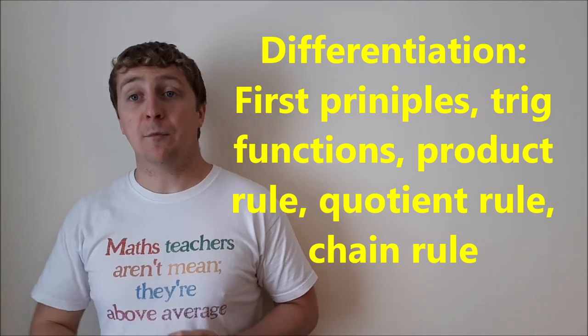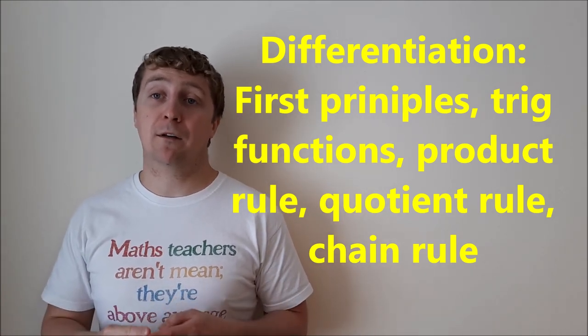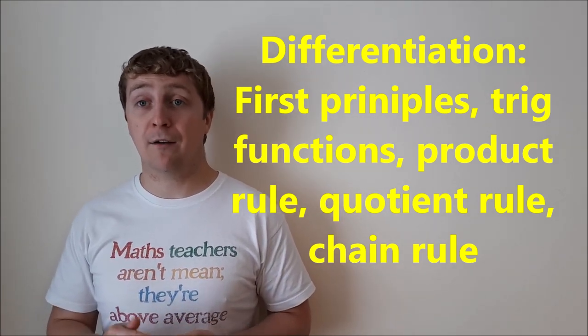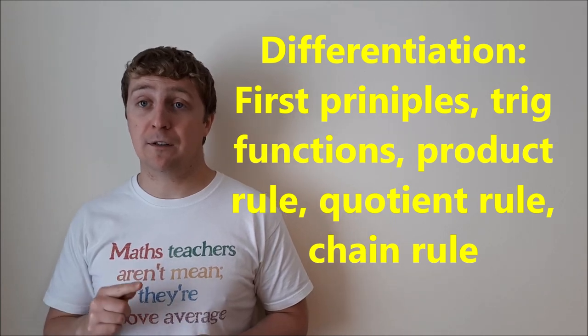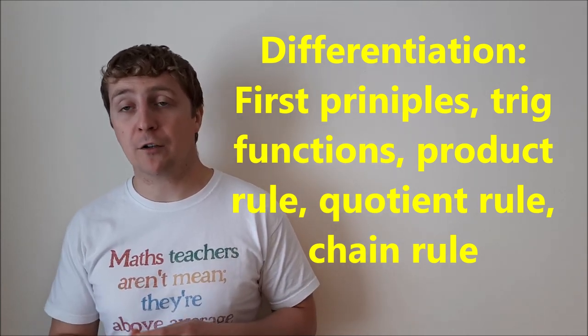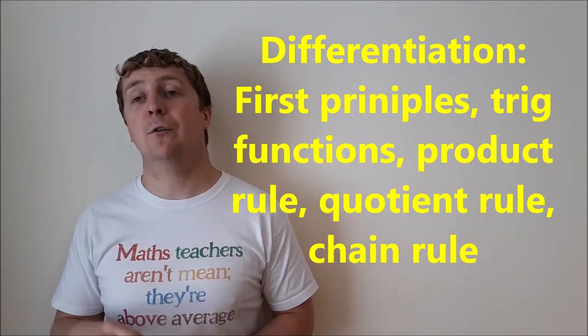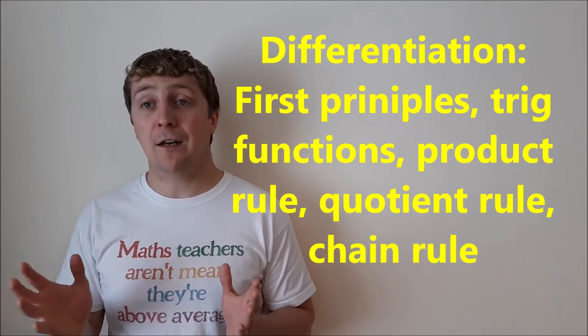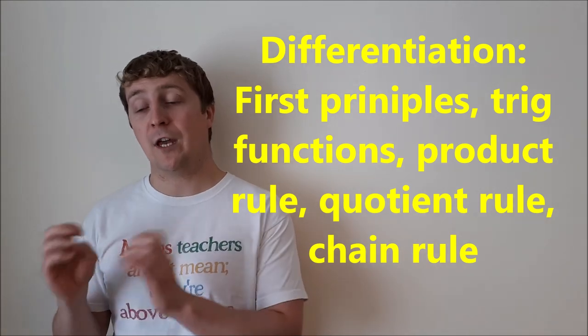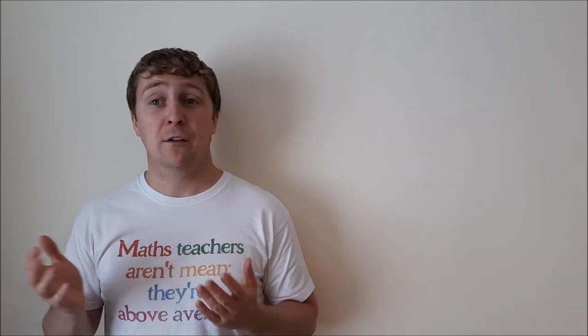In differentiation, they can bring in a bit of trigonometry. Be able to differentiate your trig functions - they're in your log tables. Know your product rule, your quotient rule, your chain rule. They're all in the log tables. But be able to use them. Be able to use them together. You could have a question where you have a chain rule within a product rule within a quotient rule. You have to be able to use them all and use them in the right order.